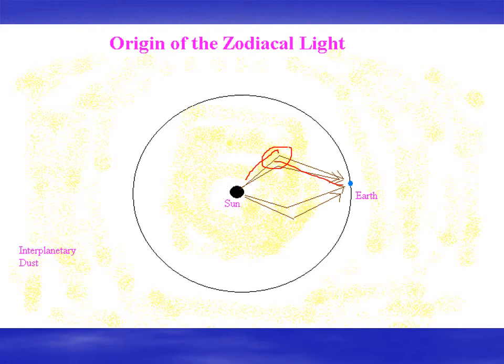The zodiacal light is very difficult to see. It's very dim, so you do not see it at all if there's a lot of twilight. You do not see it if the sky is unusually bright because of haze or any kind of light pollution. You've got to get away from the city. It's also a little bit hard to see when it lines up with the Milky Way, because it's about the same brightness as the Milky Way. It's also hard to pick out if there's any moonlight.